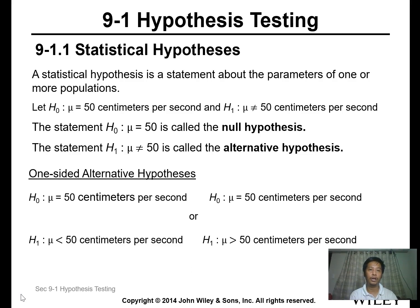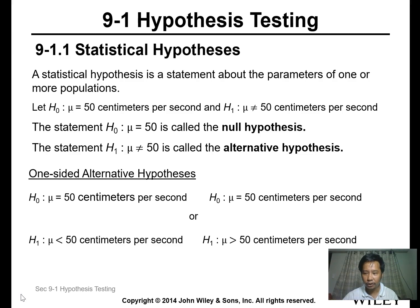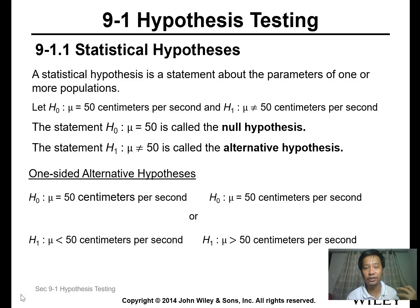We want to know about one or more populations. You can have two different hypotheses: the null hypothesis and the alternative hypothesis. The null hypothesis is the one that we don't want to happen — it states there is nothing significant — while the alternative hypothesis is the working hypothesis.